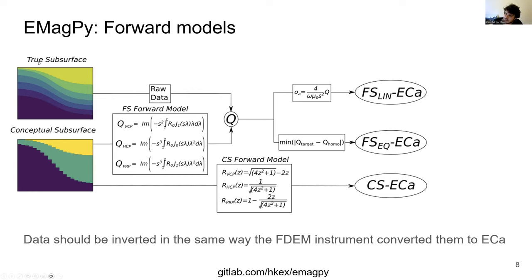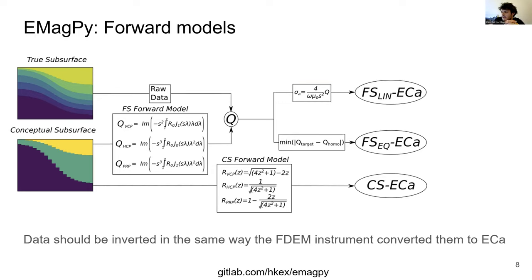EMAGPY considers two ways of converting quadrature to apparent electrical conductivity: the low induction number approximation, which is a linear transform of quadrature used by many manufacturers; and minimizing the difference between a target quadrature and a quadrature calculated for a homogeneous subsurface — referred to in EMAGPY as the full solution equivalent ECa. Some devices like the GEM2 give values in quadrature, while Geonics and GF instruments give apparent electrical conductivity. It's very important that we invert data using the same forward model as the data was collected.